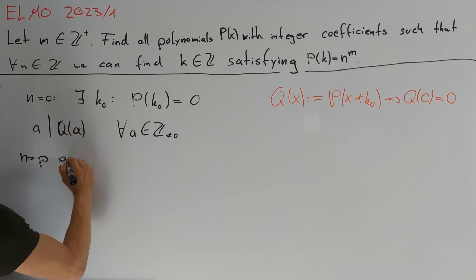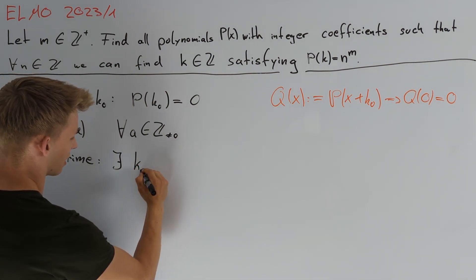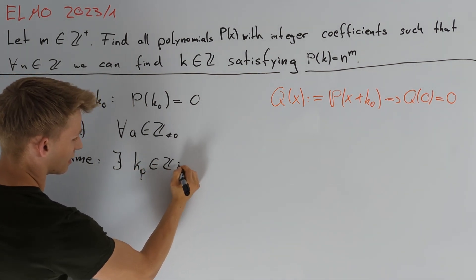Because here we get that there exists some integer kₚ such that Q(kₚ) equals p to the power of m, which implies that kₚ divides p to the power of m.